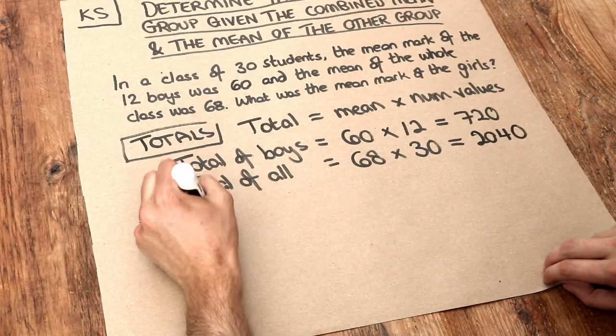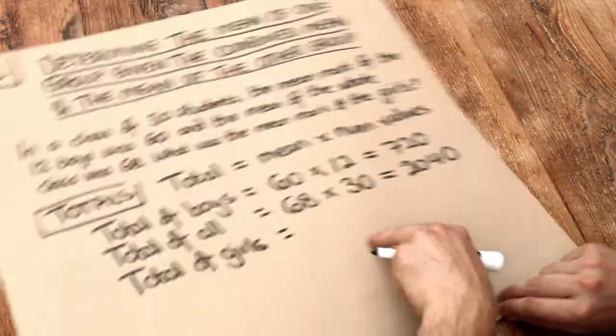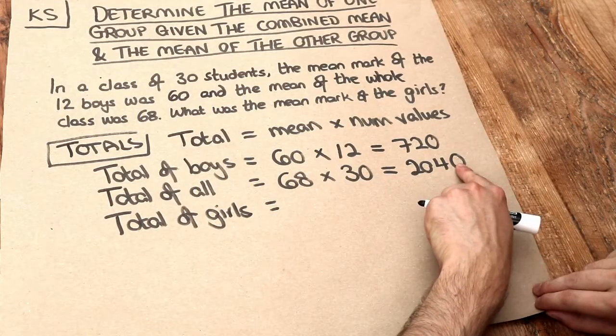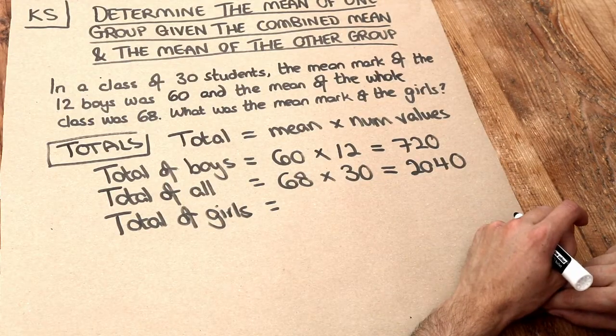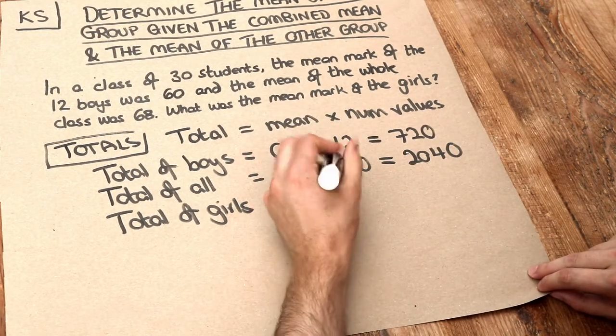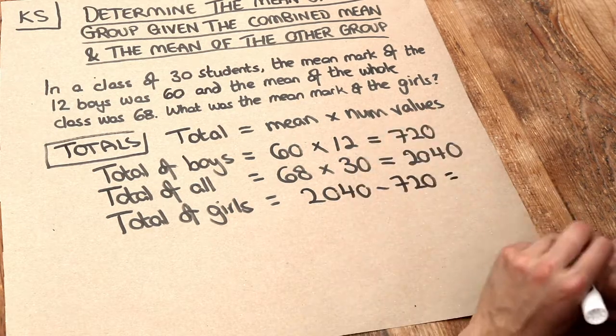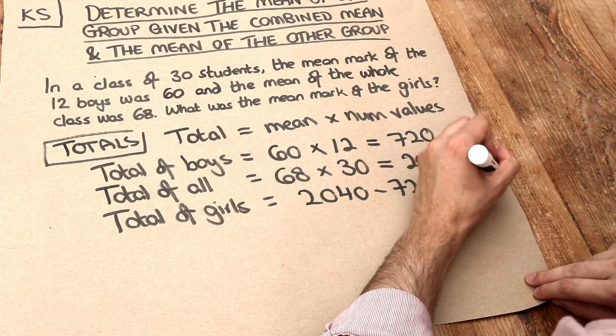So therefore, what was the total of the girls? If the total of everyone was 2,040, but the total of the boys was 720, then to get the total mark of the girls, we subtract these. So we do 2,040 minus 720, and that gives us 1,320.